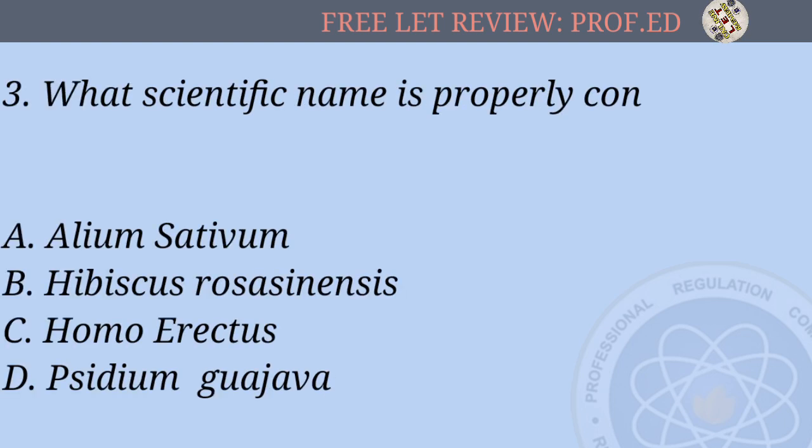Question 3: What scientific name is properly constructed? A) Allium sativum, B) Hibiscus rosasinensis, C) Homo erectus.